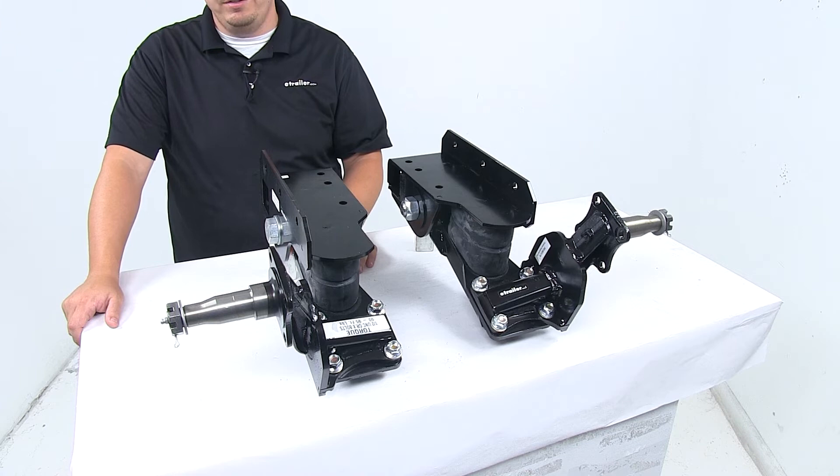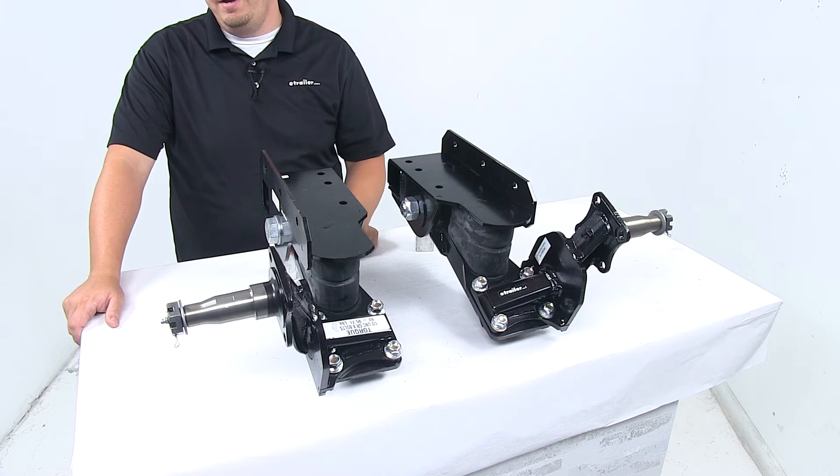The two independent units can eliminate the need for a through axle. That really helps increase your ground clearance. It lowers your deck height for easier loading and unloading.